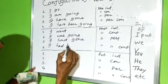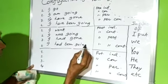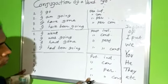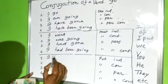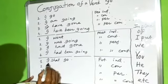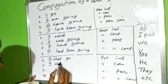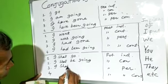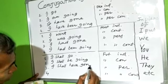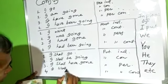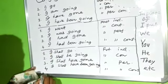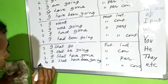I had been going. Future tense — future indefinite, future continuous, future perfect, future perfect continuous: I shall go. I shall be going. I shall have gone. I shall have been going. Now, the three different forms of the verb go: go, went, gone.